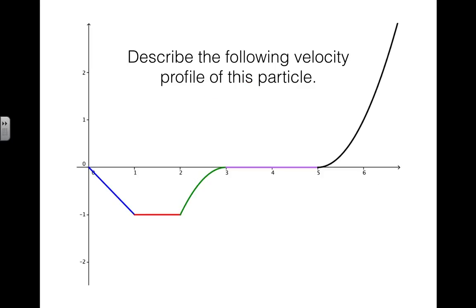So let's look at an example. Suppose we want to describe the following velocity profile of this particle. So what we're looking at here is the velocity plotted against the time and the velocity. So the y is the velocity and the x is the time.